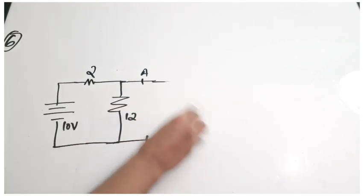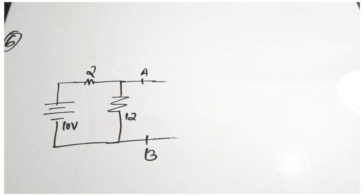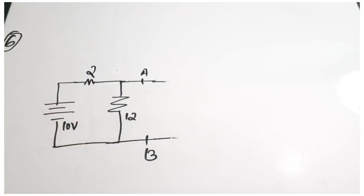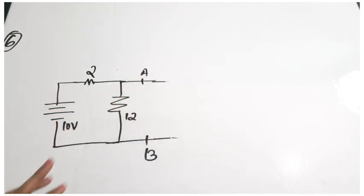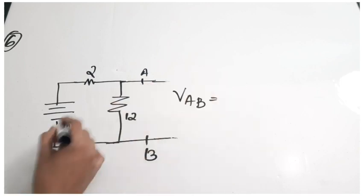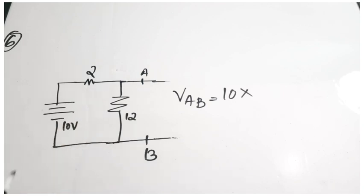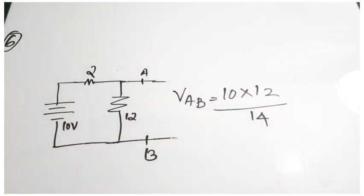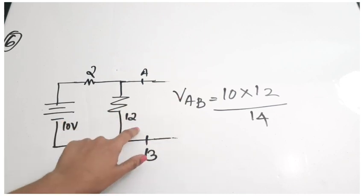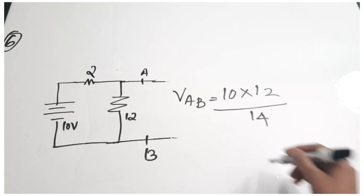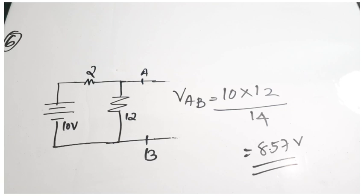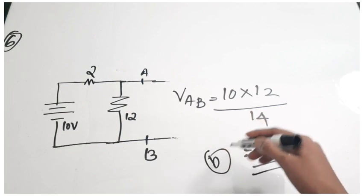After open-circuiting the load, there are only two resistors and one voltage source. Applying the voltage divider rule: VAB equals 10 into 12 by total resistance, which is 12 plus 2 equals 14... giving 8.57 volts. So this is the Thevenin's equivalent voltage. From the given options, the correct answer is 8.5 volts, which is option B.